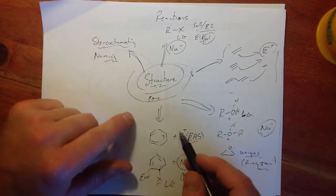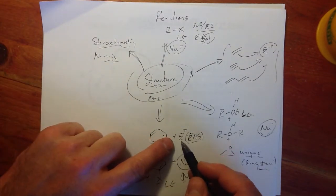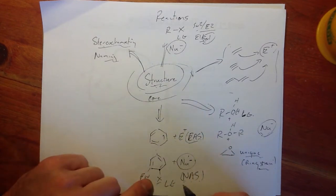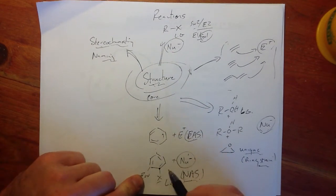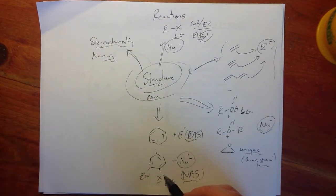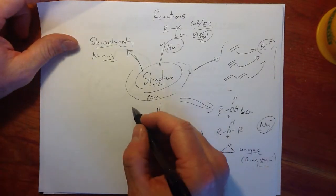In EAS, we wanted donating groups to help the reaction along. In NAS, we wanted withdrawing groups at ortho and para positions to help move the reaction along.